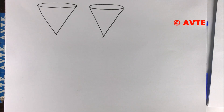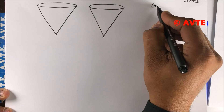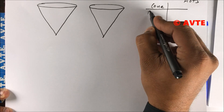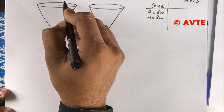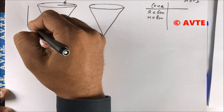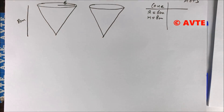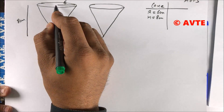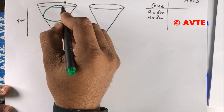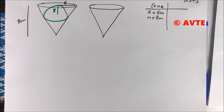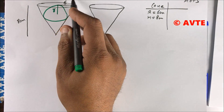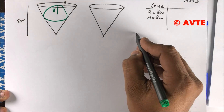Hello friends, today we are doing a question on volume and surface area. This question is categorized as HOTS. We have one cone of radius six centimeters and vertical height eight centimeters. A sphere of radius r centimeters is immersed such that some of the water overflows, and we have to find the fraction of water that overflows.